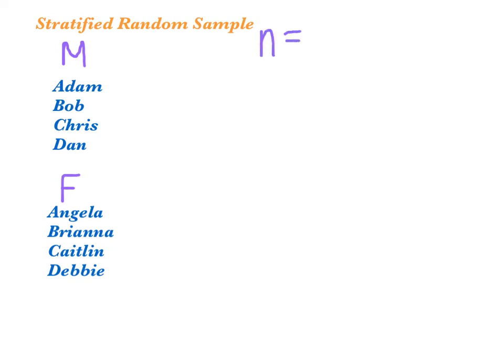Let's talk about stratified random sampling. In a stratified random sample you break the population up into groups or strata based on some certain variable. In this case I broke those same 8 names up into males and females. A stratified random sample is a great way to ensure that your sample represents the population. We're going to take a sample of size 4, so we're going to take an SRS from each of these 2 groups.